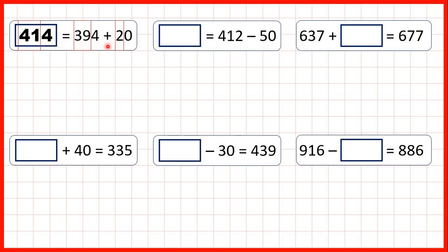39 plus 2 is 41, and then because we're not adding any ones, the 4 in our ones stays the same.